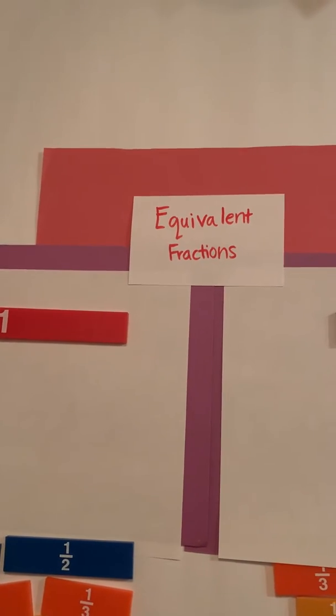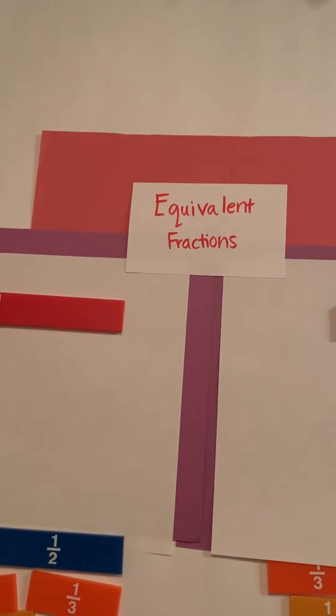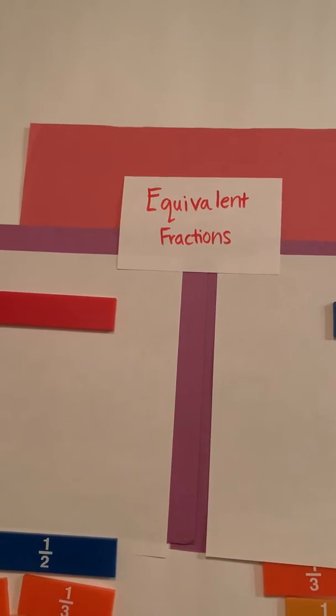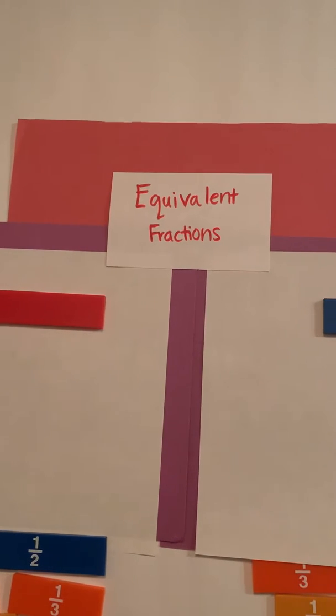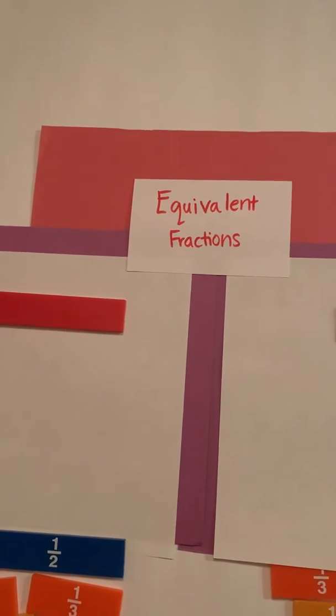Now equivalent means that the different fractions are equal to each other, just like if we're balancing an equation and we say that 3 plus 2 equals 5, that would be equal. We're going to find fractions that are equal to each other.